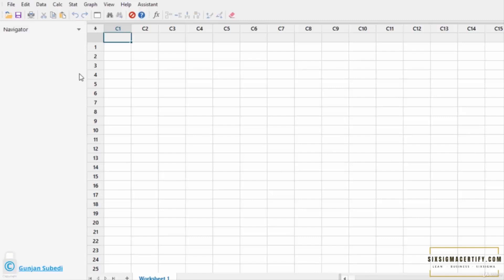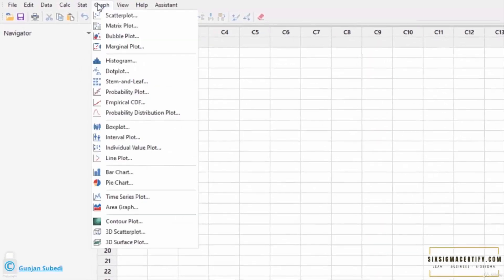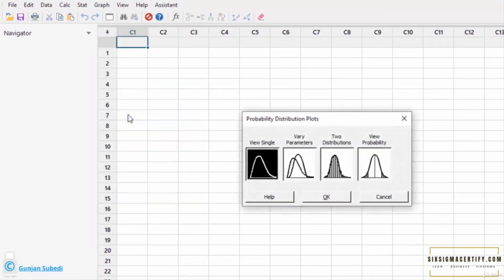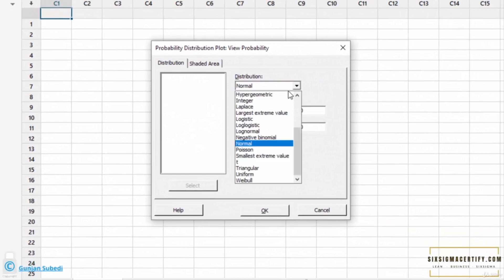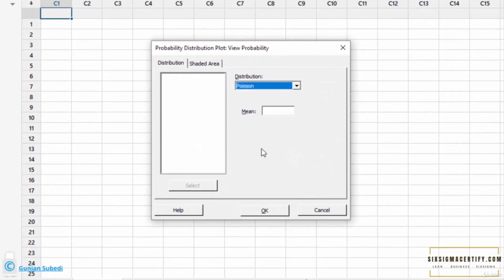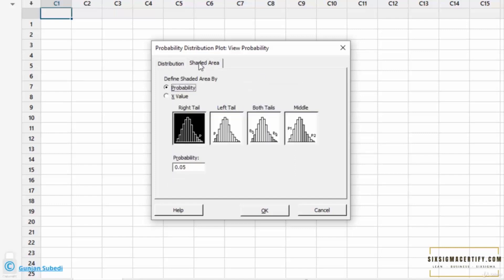To carry out the Poisson distribution with Minitab, we go to Graph and click Probability Distribution Plot. Here we select View Probability and click OK. We are interested in Poisson distribution, so we select Poisson in the distribution panel. The mean is two crashes per year, so we write 2 in the mean. We then go to the shaded area.